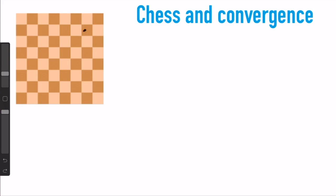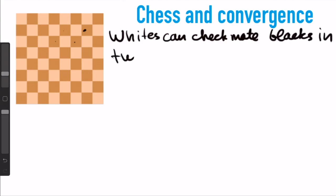Suppose we have some situation on the board with black pieces somewhere and white pieces somewhere, and suppose we're in a situation where whites can checkmate blacks in two moves.